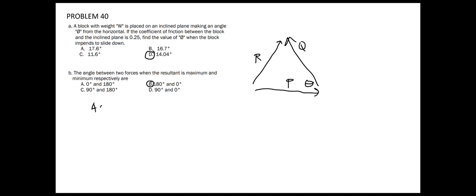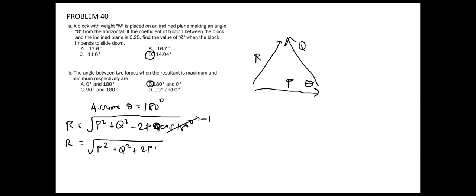If we assume that theta is equal to 180 degrees, using the cosine law, we get R equal to square root of P squared plus Q squared minus 2 times P times Q cosine of 180 degrees. And cosine of 180 degrees is equal to negative one. Simplifying, we get R equal to square root of P squared plus Q squared plus 2 times P times Q.